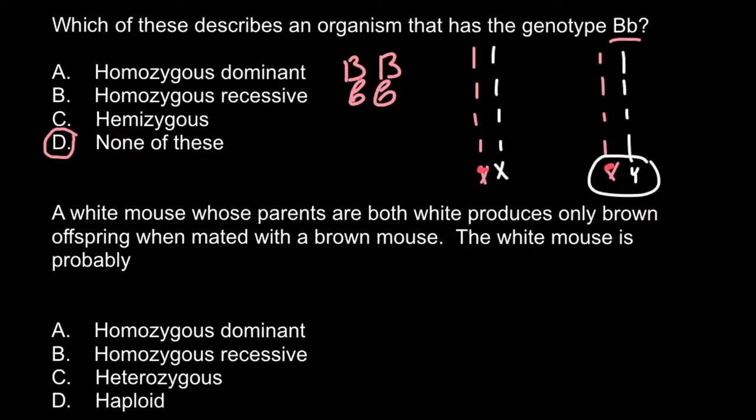So next question. A white mouse whose parents are both white produces only brown offspring when mated with a brown mouse. The white mouse is probably, and once again here are four answers to choose from.